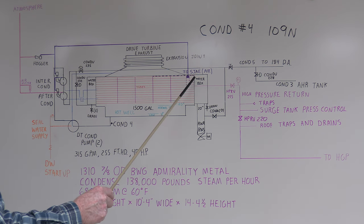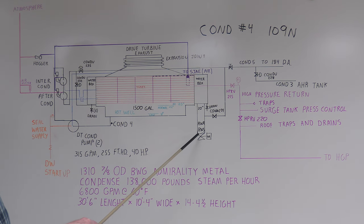The normal level in this was 22 inches, high level is 25 inches, low level is 4 inches. About 1,500 gallons at normal level. From here you had your suction line to your dump condenser condensate pump.